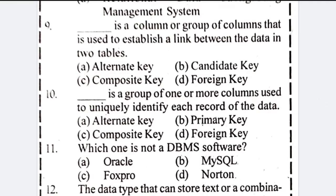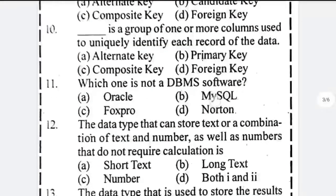A column or group of columns used to establish a link between data in two tables — it is foreign key. A group or more group of columns used to uniquely identify a record of data — it is primary key.